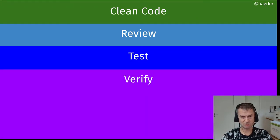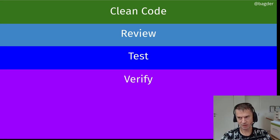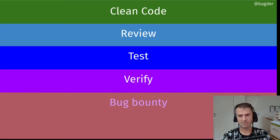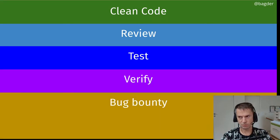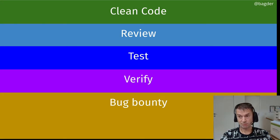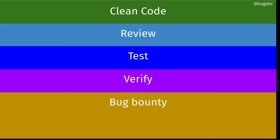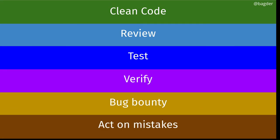We verify the code with analyzers, stress tests, fuzzing, and whatever methods we can find. We offer bug bounties to help users and security researchers spend time finding those flaws that slip through anyway, in spite of our efforts. If they find things — or anyone else finds things — we act on those mistakes. Clean code, review, test, verify, bug bounty — and we act on the mistakes when we get them.